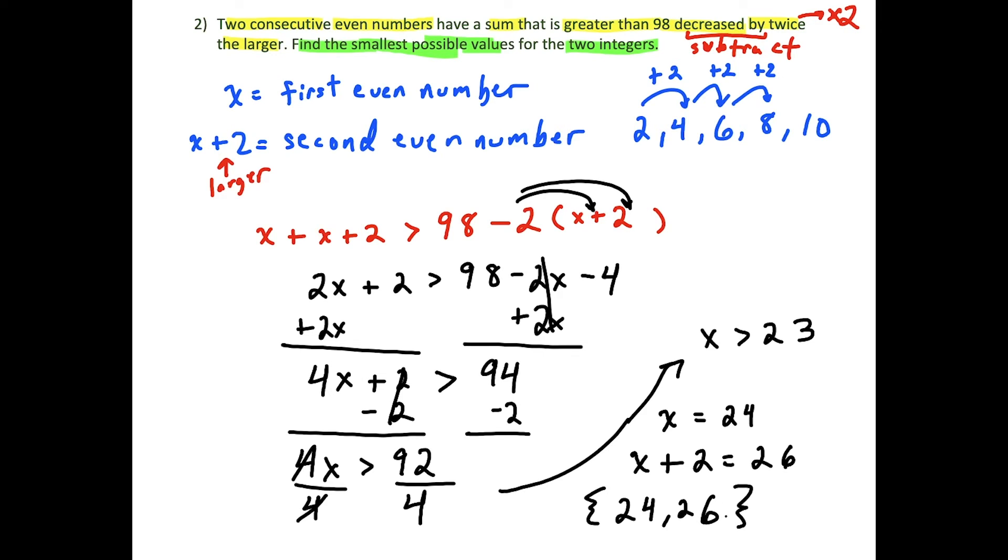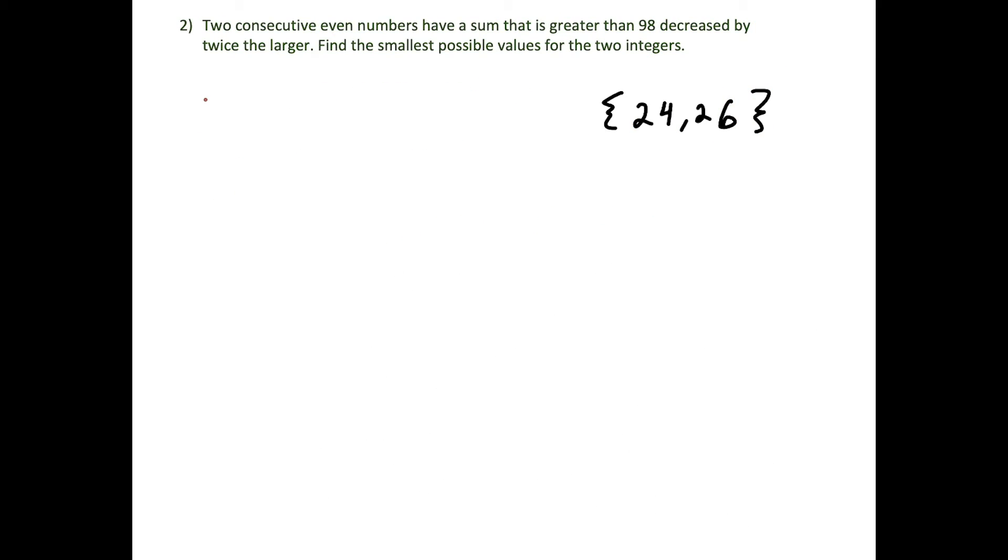Now let's go ahead and check, we're going to verify here that these two do in fact check out. Let's check our answer and throw our solution set back into the word problem. We have the sum of these two consecutive even numbers, so we're going to add 24 and 26. And it's going to be greater than 98 decreased by twice the larger, and the larger of the two numbers is 26. So 24 plus 26 is 50. Is 50 greater than 98 minus 2 times 26 is 52? When we simplify the right side, we have 98 minus 52 which is 46. And this is in fact true. 50 is greater than 46. So these numbers do check out.